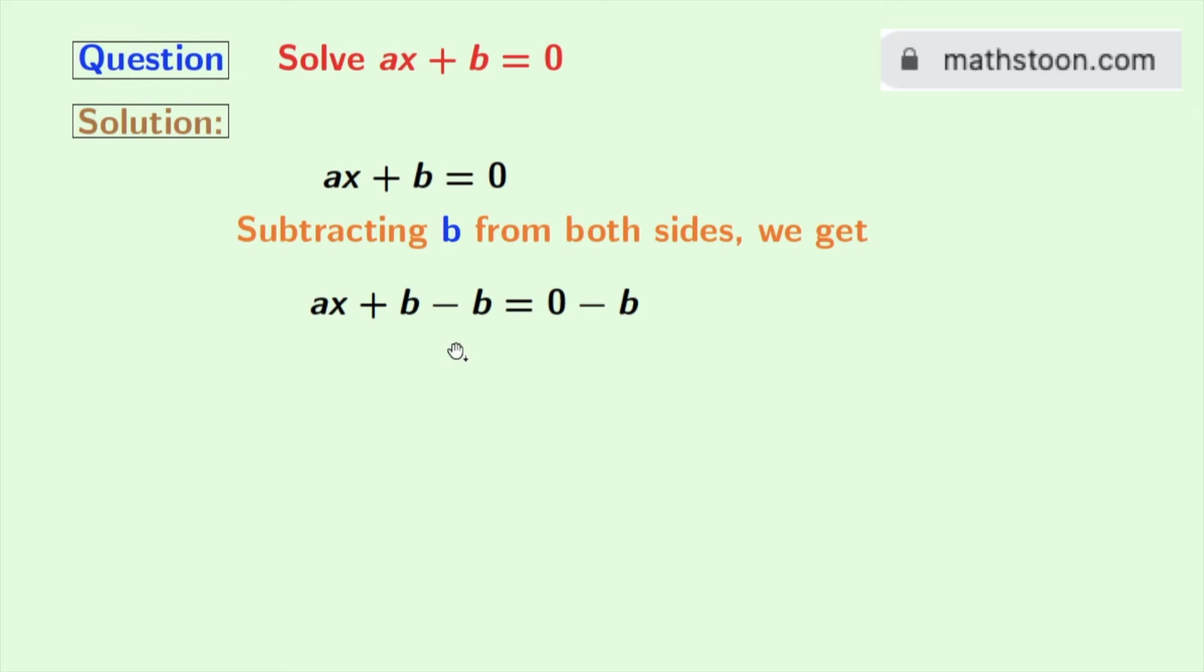Now look, in the left hand side, we have plus b and minus b, which means 0. So we are left with ax. And in the right hand side, 0 minus b is minus b.